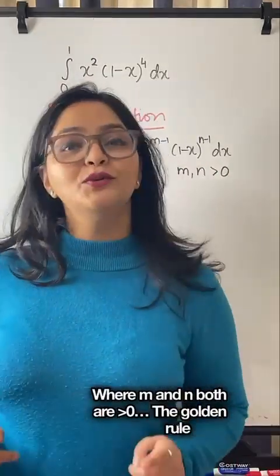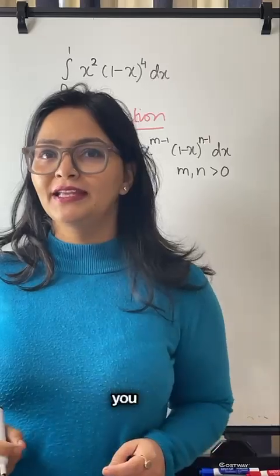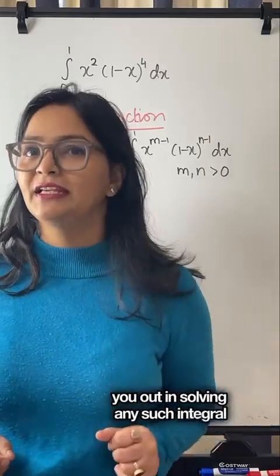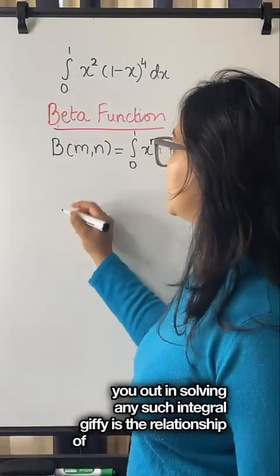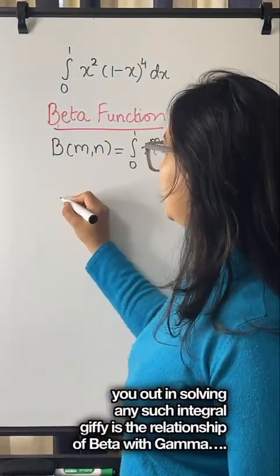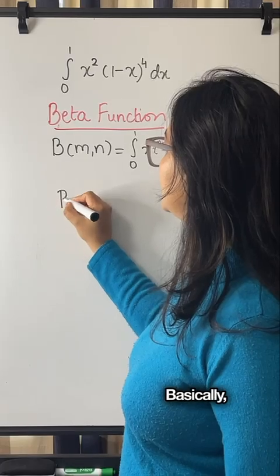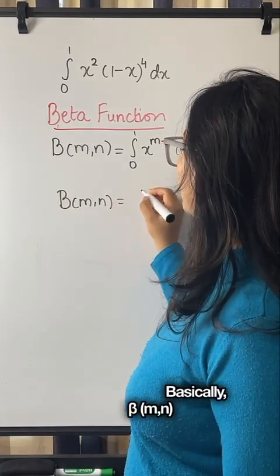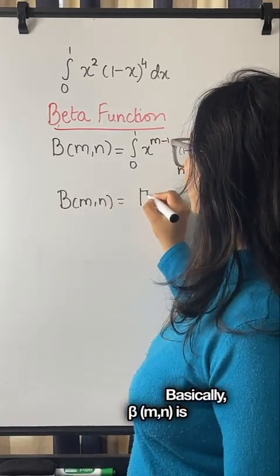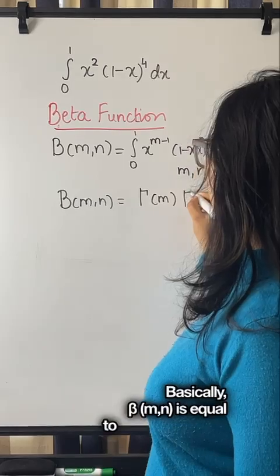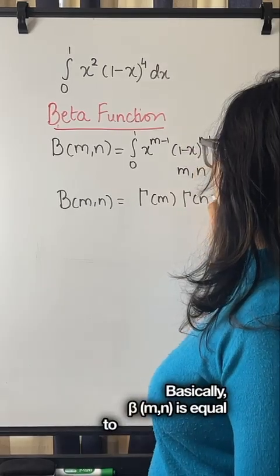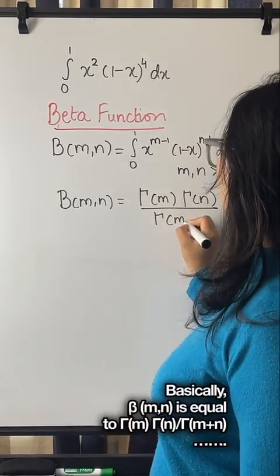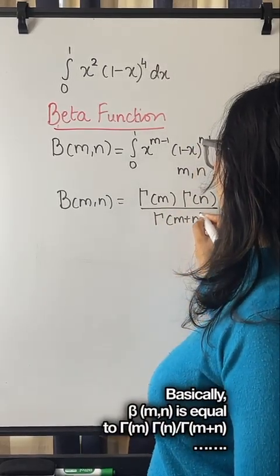The golden rule here, which will help you solve any such integral in a jiffy, is the relationship of beta with gamma. Basically, beta(m, n) is equal to gamma(m) times gamma(n) upon gamma(m plus n).